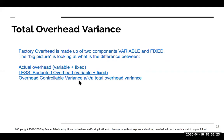Factory overhead is made up of two components: variable and fixed. The first thing we want to do with a question like this is to look at the actual overhead versus the budgeted overhead to see where we are. We will sometimes call this difference the overhead controllable variance.